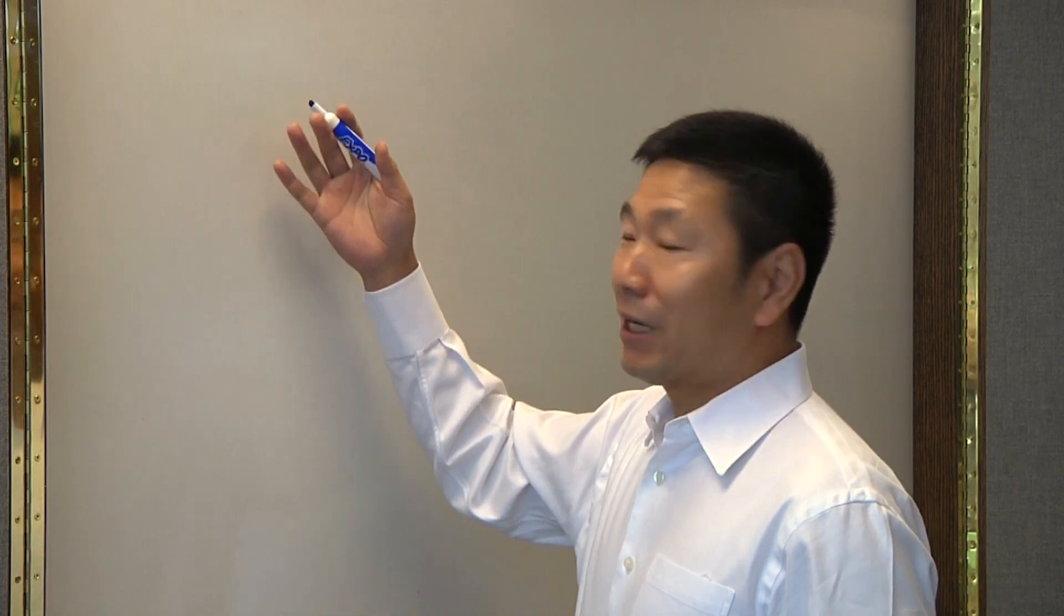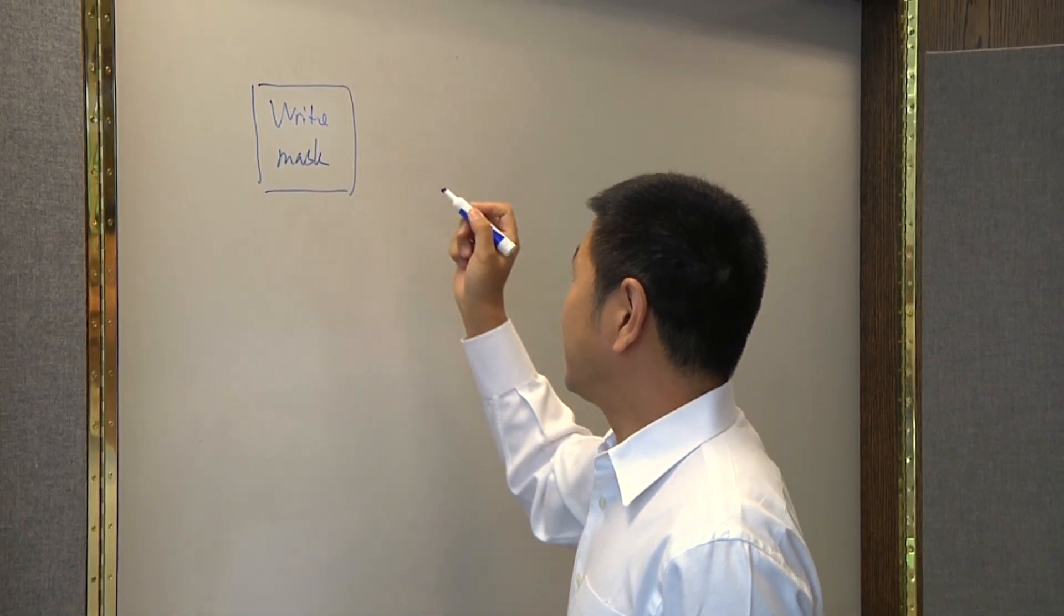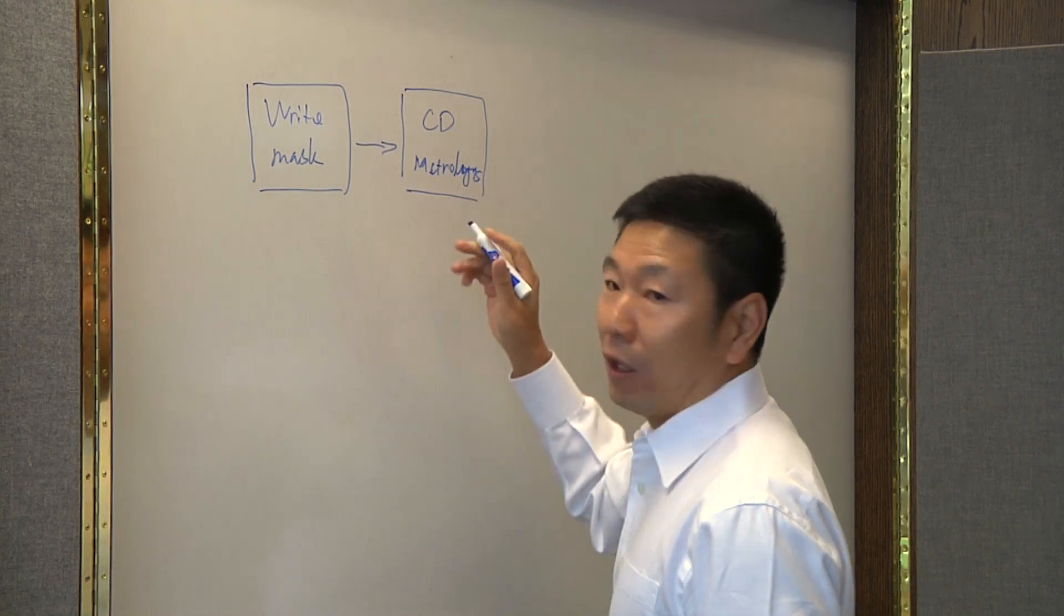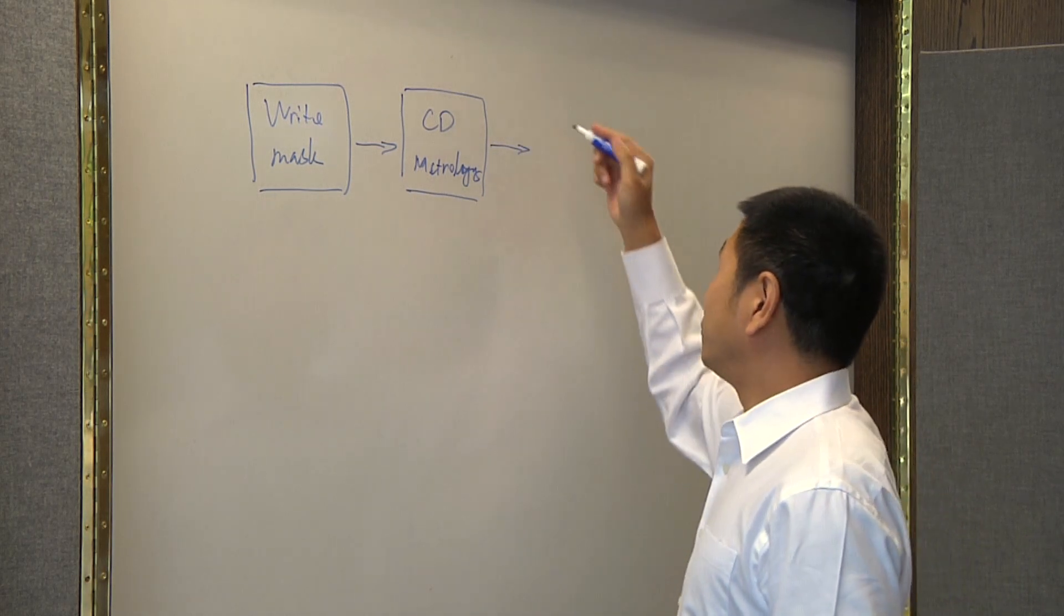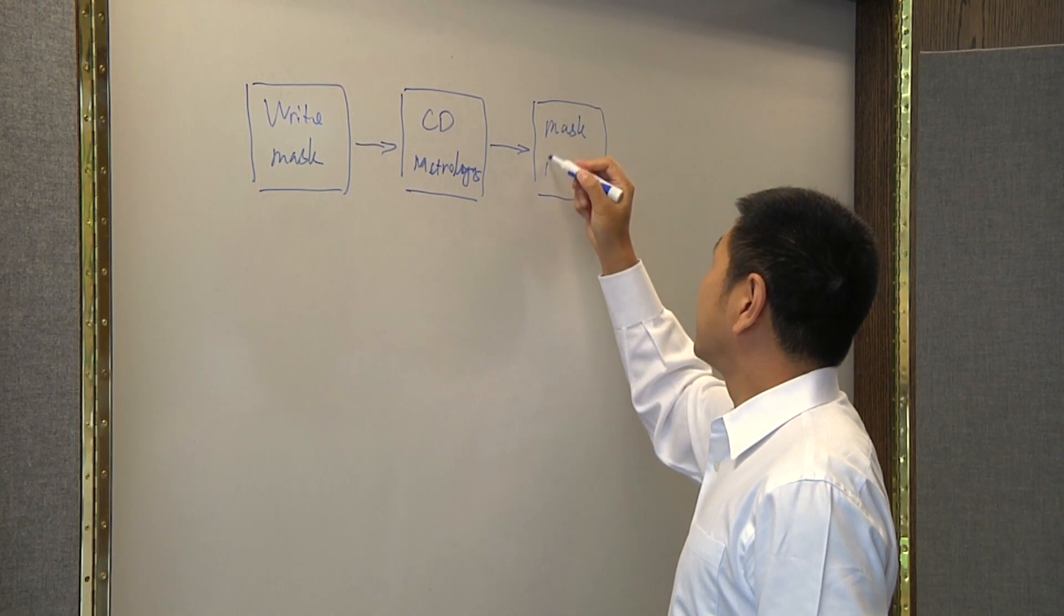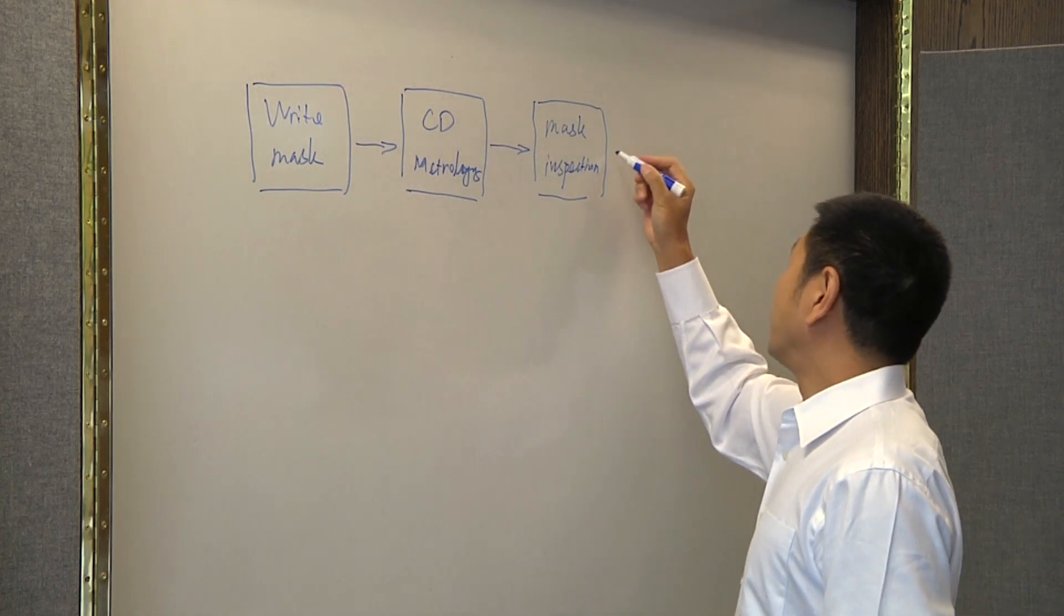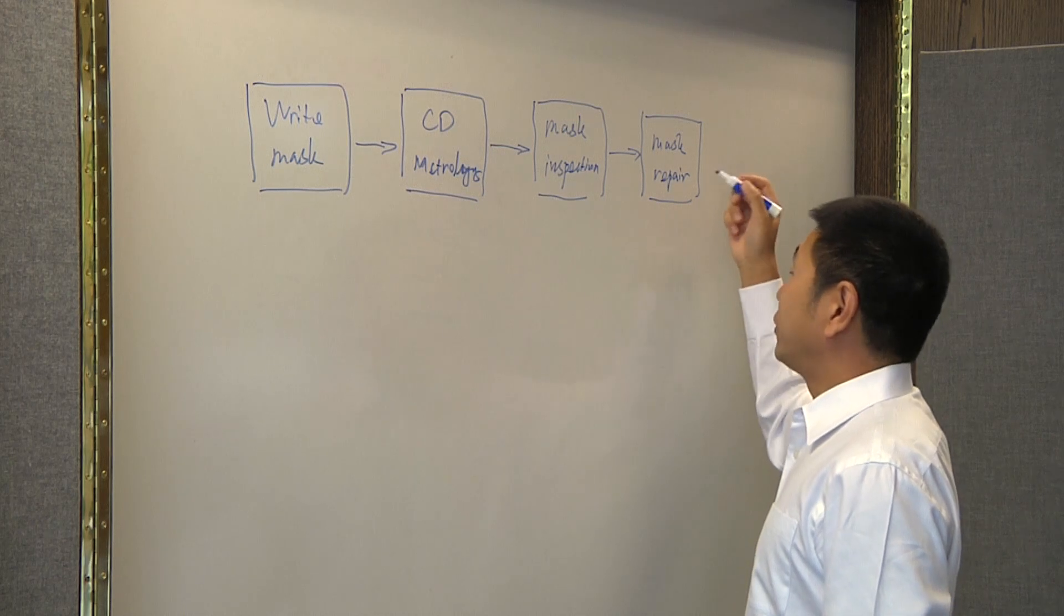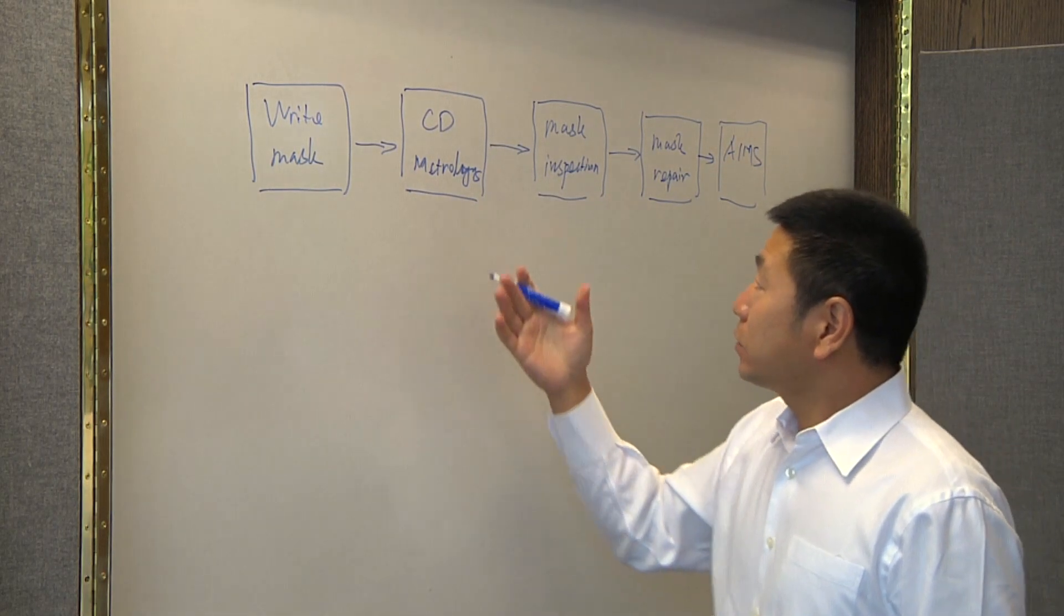So Leo, why don't you draw some of this out for us? All right. First, let me explain the mask-making process. First step, you have to write a mask with a mask writer, followed by mask CD metrology, which is usually done by a CD-SEM. When you measure the CD, once the CD is correct, you do the mask inspection to detect the defect and figure out which defect you need to repair. Then you do the mask repair. After you do the mask repair, you use the AIMS tool to verify the repair result.